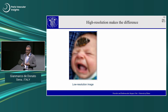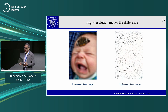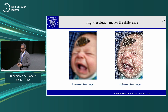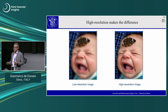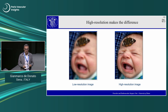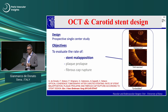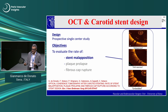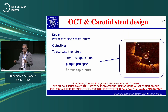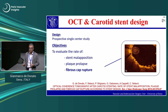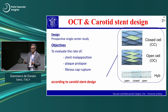It became clear that high-resolution imaging can really make a difference — if you clearly see things that are wrong, you can change them. After a few years, we began a comparative evaluation of stent designs, assessing malposition, plaque prolapse, and fibrous cap rupture according to stent design.